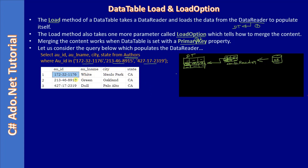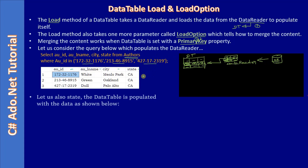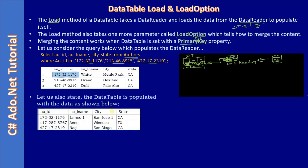This is the DataTable. We have author ID, author name, city, and state — four columns. Based on author ID we filter three records, so this is our DataReader data — the incoming records. The DataTable is already populated with existing data. Based on author ID there are two matching rows between the incoming data and the existing DataTable data.